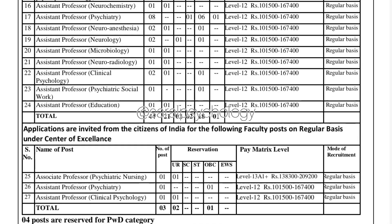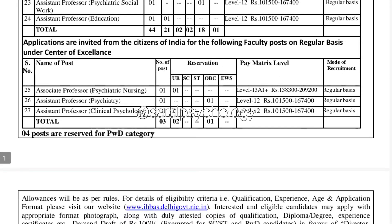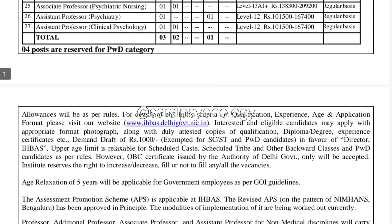There is also an Assistant Professor post in Clinical Psychology belonging to the PWD category. There is one post for the General category under PWD. The pay scale is 1,15,000 to 1,67,400, and this is a permanent job.